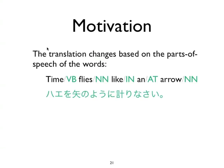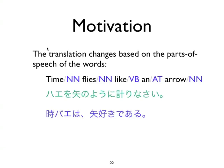Another possible interpretation is to assign both 'time' and 'flies' as nouns and to treat them as a compound noun. That would mean we have some kind of creature that is a fly but somehow related to time, and that creature displays a preference for arrows. If we were to translate this into Japanese we might end up with some nonsense like 'Tokibai wa yazuki de aru.' Of course this is not a very good translation, but it's a strange interpretation of this sentence.